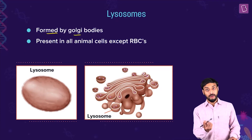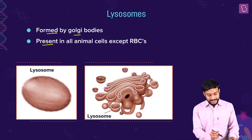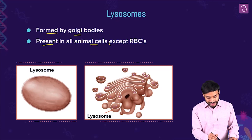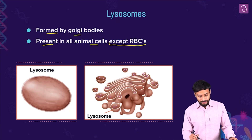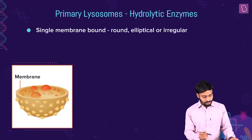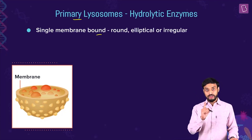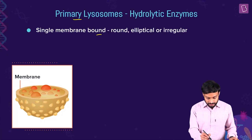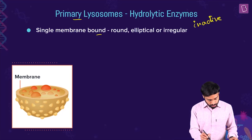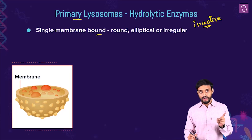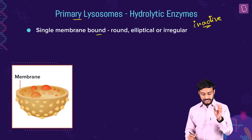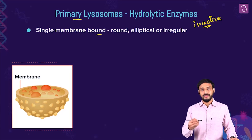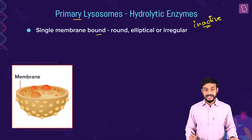Lysosomes are formed by the Golgi bodies and are present in all animal cells except RBCs. They are formed while packaging proteins in the Golgi complex. They are single membrane-bound structures. The newly formed lysosomes are called primary lysosomes, and they store hydrolytic enzymes in the inactive form - not in the active form.